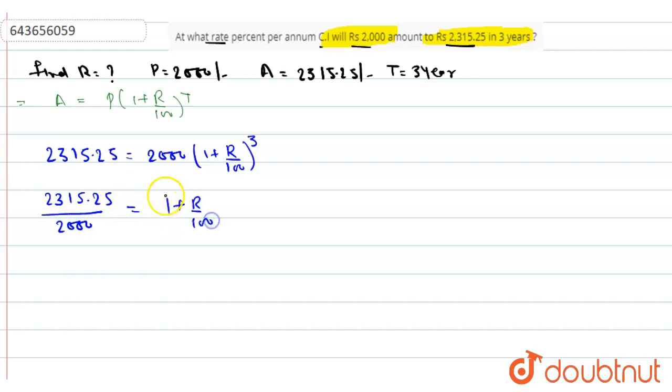By solving this equation, we get (21 upon 20) whole cube equals (1 plus R upon 100) to the power 3. Taking cube root on both sides, 21 upon 20 equals 1 plus R upon 100.